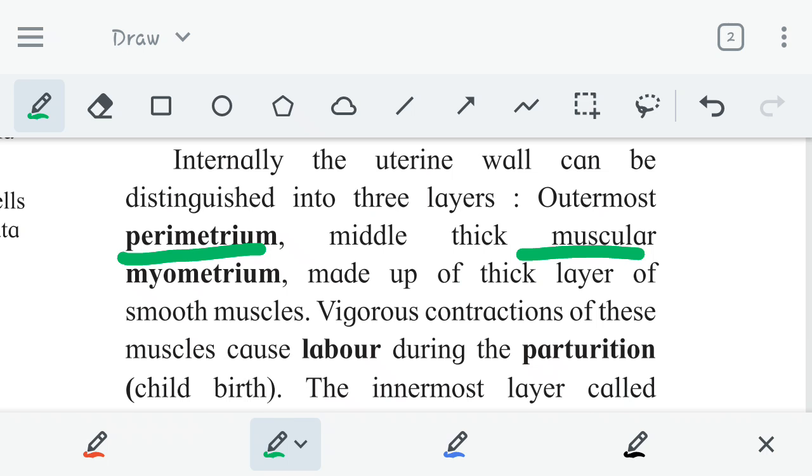Then middle thick muscular myometrium. The middle layer is also called myometrium, which is actually made up of thick layer of smooth muscle. This is important. The middle layer is made up of thick layer, its thickness is more relative to perimetrium or the inner layer endometrium, and it is made up of smooth muscle.